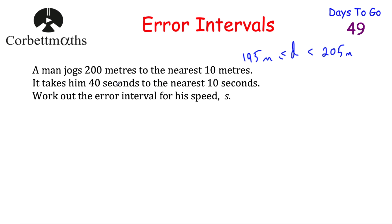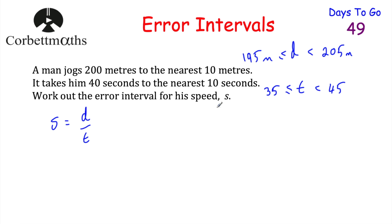In terms of time: it takes him 40 seconds to the nearest 10 seconds. It could take him 39, 37, 36, or even 35 seconds — nothing below 35. So the time is greater than or equal to 35 seconds. For times above 40, it could be 41, 42, 43, 44, or 44.998 seconds, but not 45 seconds. So time is less than 45 seconds. Now we have error intervals for distance and time, and we need to find the error interval for speed, where speed = distance ÷ time.